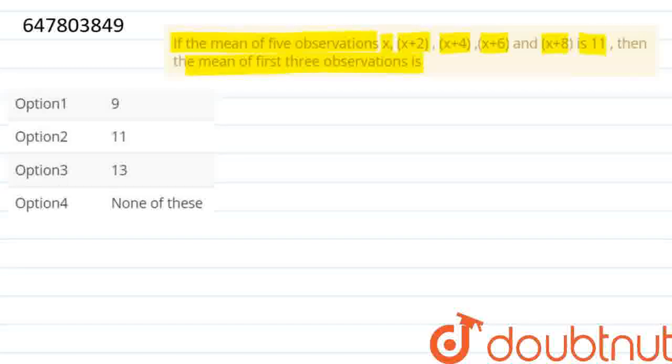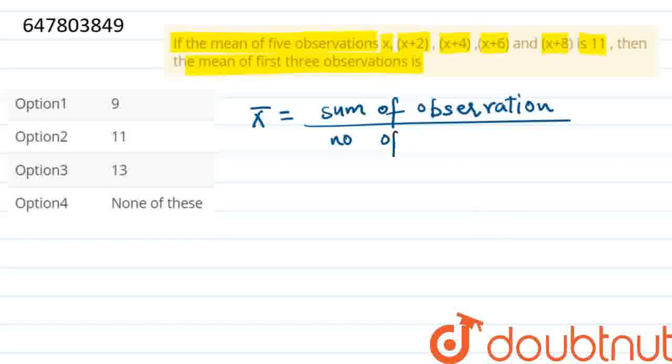सबसे पहले तुम्हें बता दू कि formula होता है mean का equals to sum of observations upon number of observations. यह होता है formula mean का.